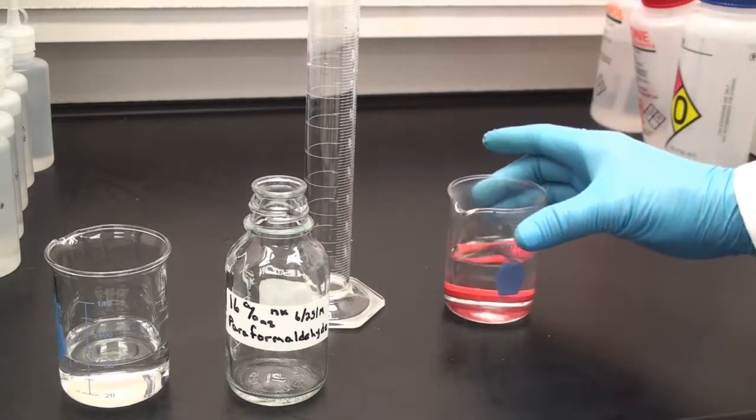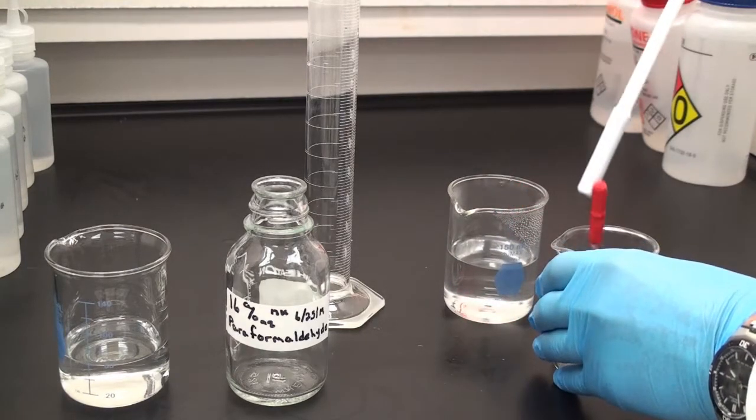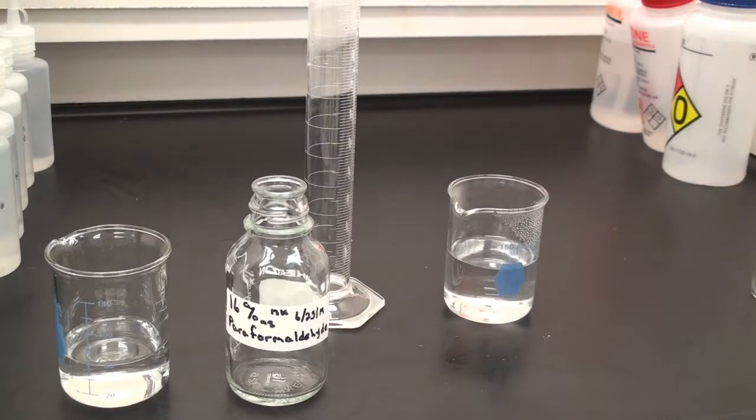So I have my paraformaldehyde with a stir bar in there. And of course, remember to remove the stir bar before you start to pour so you don't pour the stir bar into your graduated cylinder.